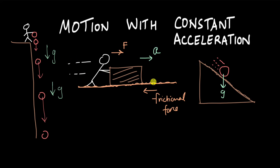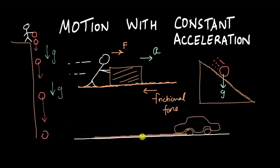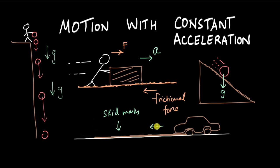Motion with constant acceleration is also seen when a car moving on a road suddenly applies brakes to avoid a collision. It comes to a stop and leaves skid marks. Even if the car gets into a crash, investigators can tell how fast it was moving, because when the brake is applied, friction between the road and the tire acts in the opposite direction, providing a constant acceleration in the opposite direction.